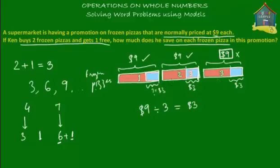How much did he actually pay for each pizza? For pizza number one he paid $9 minus $3, which equals $6. Similarly, for pizza number two he also paid $6. And for pizza number three he also paid $6. So that's the model diagram way of doing it.